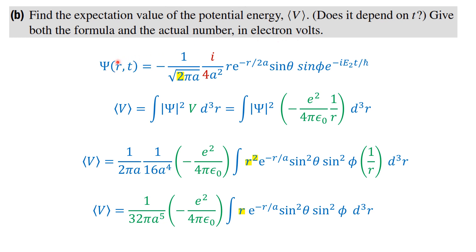The total wave function Ψ(r,t) is equal to minus 1 over √(2πa), times i over 4a², times r e^(−r/2a), times sin(θ) sin(φ), times e^(−iE₂t/ℏ). The expectation value by definition is the integral of |Ψ|² times V d³r, where the potential for hydrogen is V = −e²/(4πε₀r).